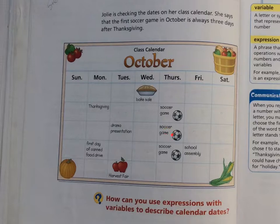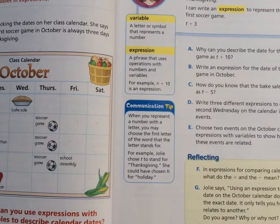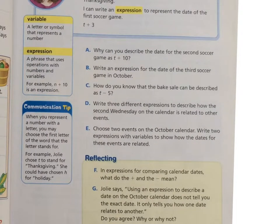Can you estimate when the third soccer game would be? If you said 17 days — because 7 plus 10 — this is 10 days after, and this is seven. Let's try that: 11, 12, 13, 14, 15, 16, 17. Math rocks! Now letter B: Write an expression for the date for the third soccer game in October — we just did that. The answer is T plus 17.